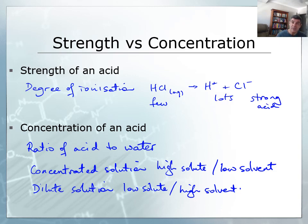However, if we had an acid where there was lots of the HCl molecule, for example, or the acid molecule, and few of the ions, then we would call this a weak acid.